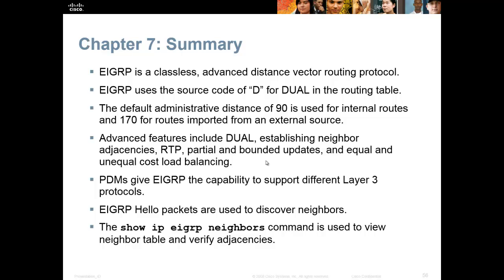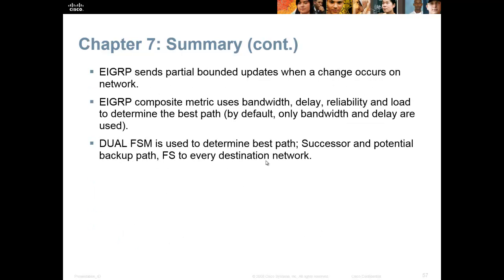So to wrap it up, EIGRP is classless. It's an advanced distance vector routing protocol and it uses D in the legend. It has an administrative distance of 90. It sends hello packets every five seconds. The hold down timer is three times the hello timer. The IP address it uses for multicast is 224.0.0.10. You can change the bandwidth, delay, reliability, load — it's very customizable, which is obviously a feature advanced networks want. And it only sends partial updates — it only sends updates when a change occurs.